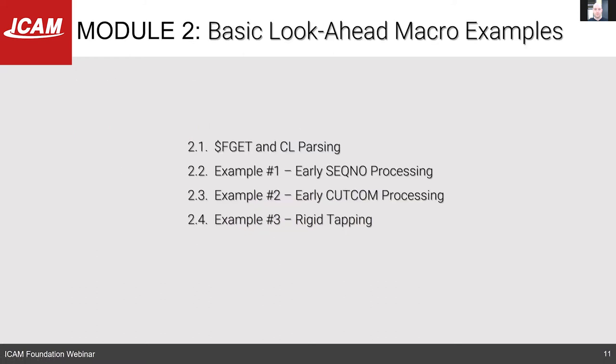For the examples today, we're going to look at how to process sequencing early in the post, how to process your work offset at the beginning so the code occurs at the desired place with a default if not present, and a quick macro on how to support rigid tapping. For these examples, we're going to use a new function, $fget, which lets you search for a major word and do some CL parsing to navigate through the CL file.